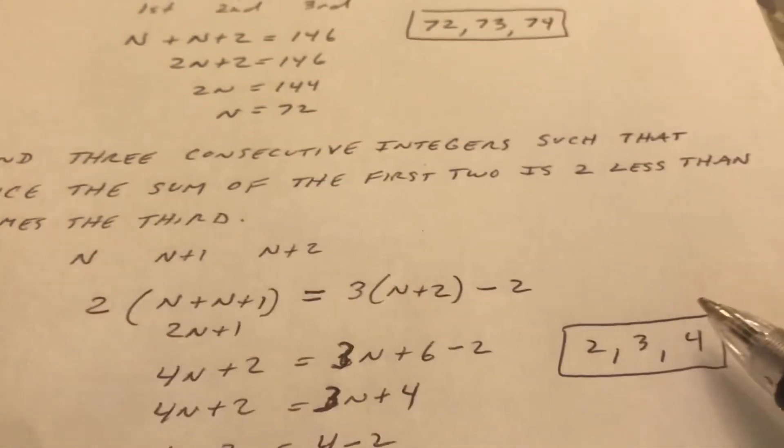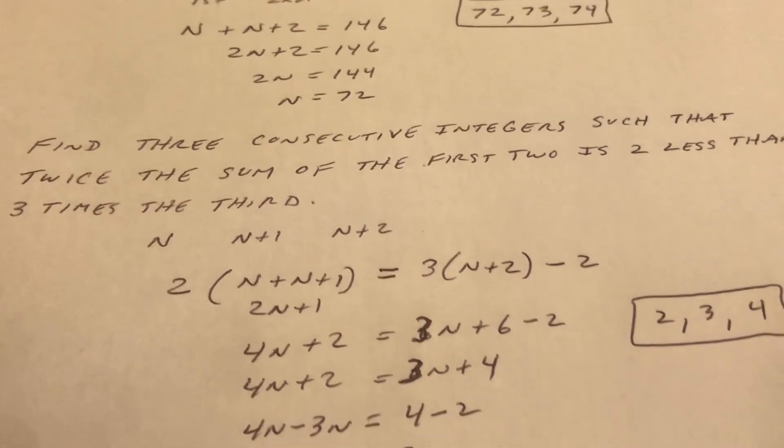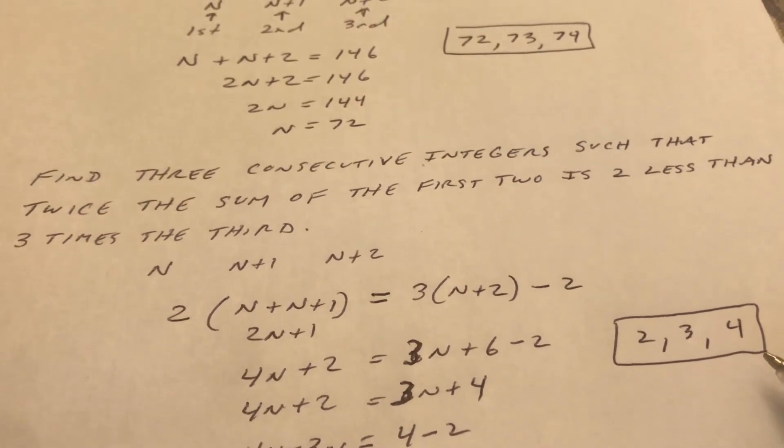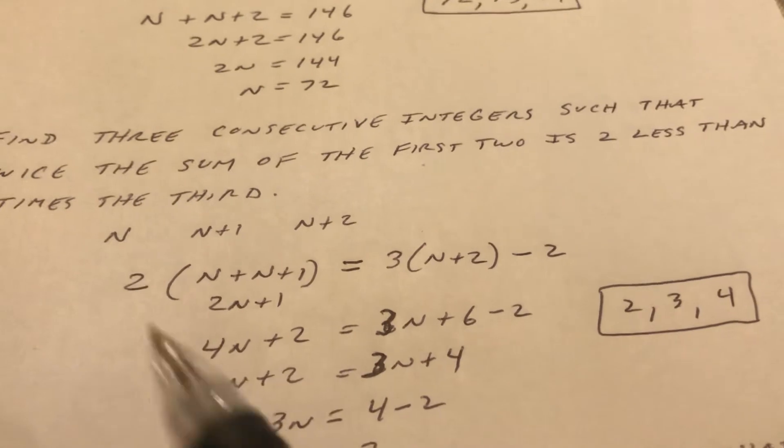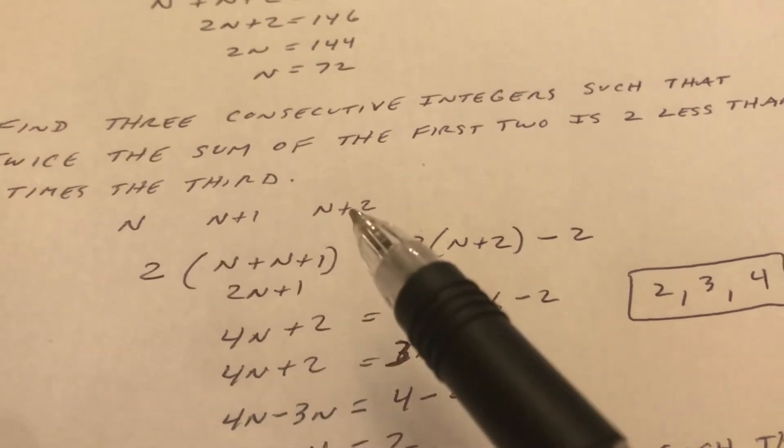The second problem: find three consecutive integers such that twice the sum of the first two is two less than three times the third. A little bit harder. So here's the first, here's the second, here's the third.